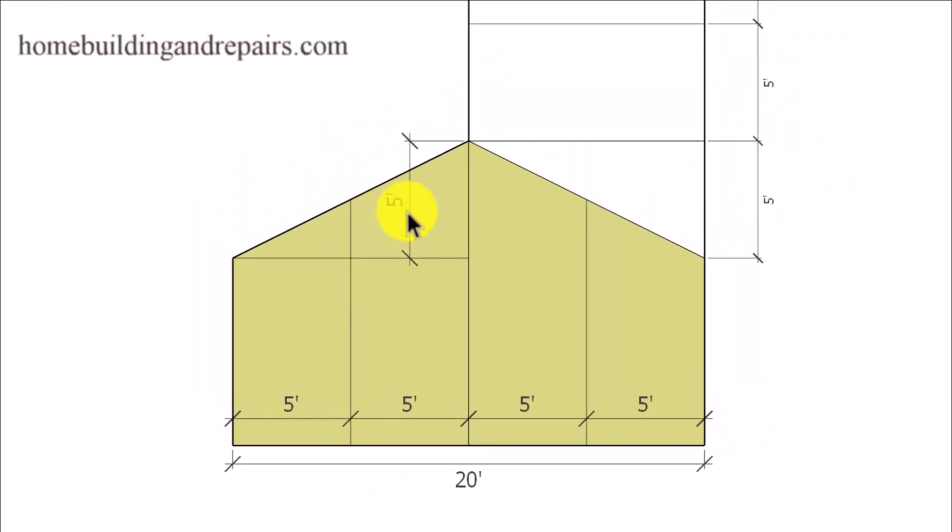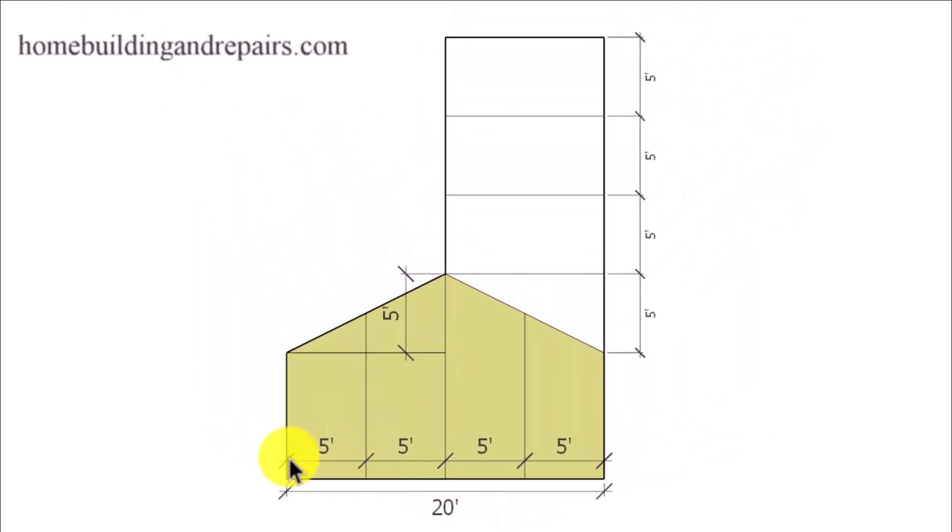Now how do we figure out a half pitch? You guessed it. Half of the span, 10 feet, will represent the top of our roof for a half span pitch. And this would represent a 45 degree angle or a 12 and 12 roof pitch.